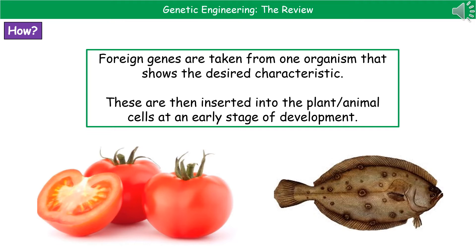For our tomatoes, they used to be really susceptible to frost. So if we had a hard frost, a lot of the tomatoes would be ruined. What we've actually done is we've taken the antifreeze gene from the flounder — the fish on the right there — and inserted it into tomato plants. Now we have varieties of tomato plant that are very frost resistant, so they're not going to be as susceptible to a frost.